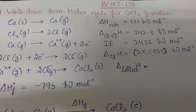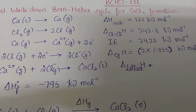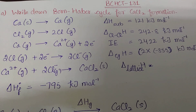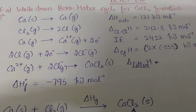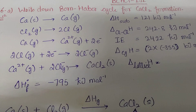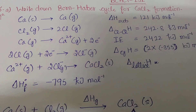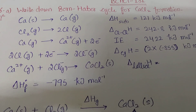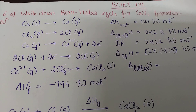Hello students, welcome to Core Classes. Today we are going to discuss BAHCT 131 assignment solution. We are going to discuss question number six: write down the Born-Haber cycle for calcium chloride formation.